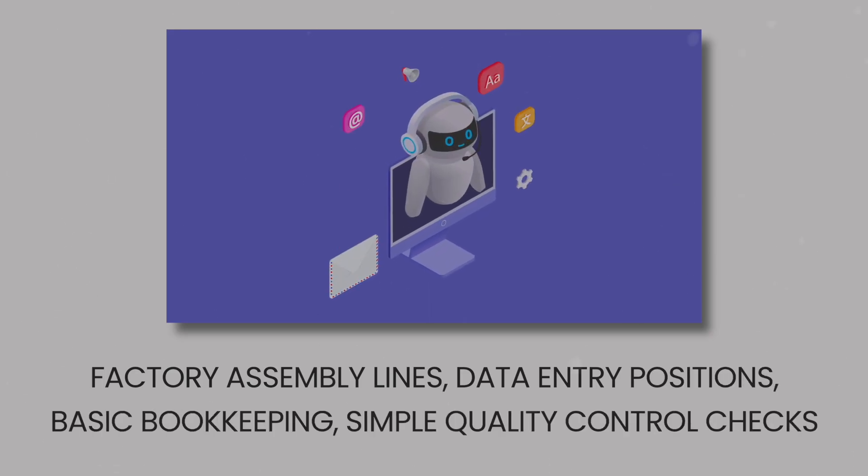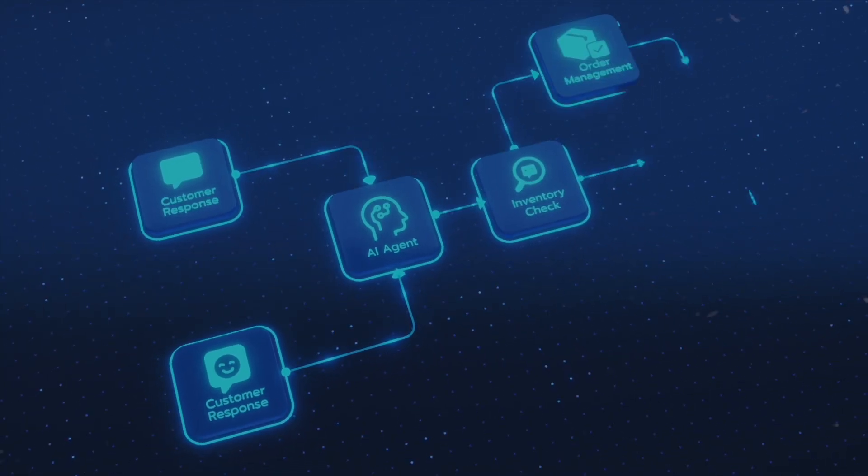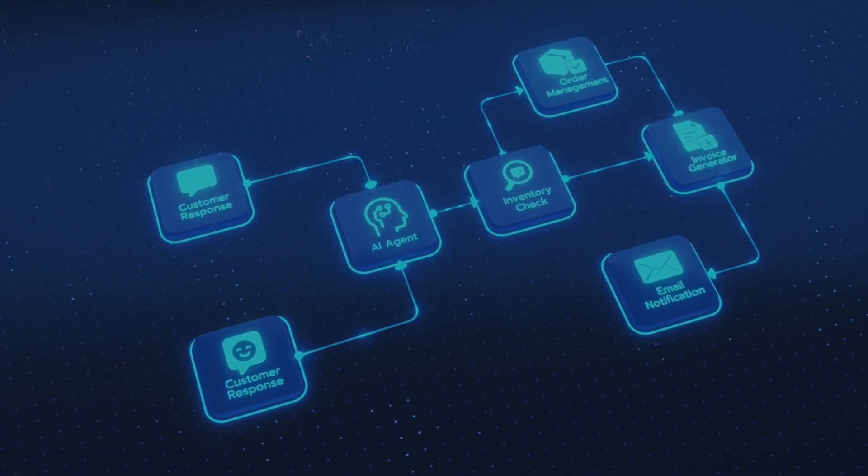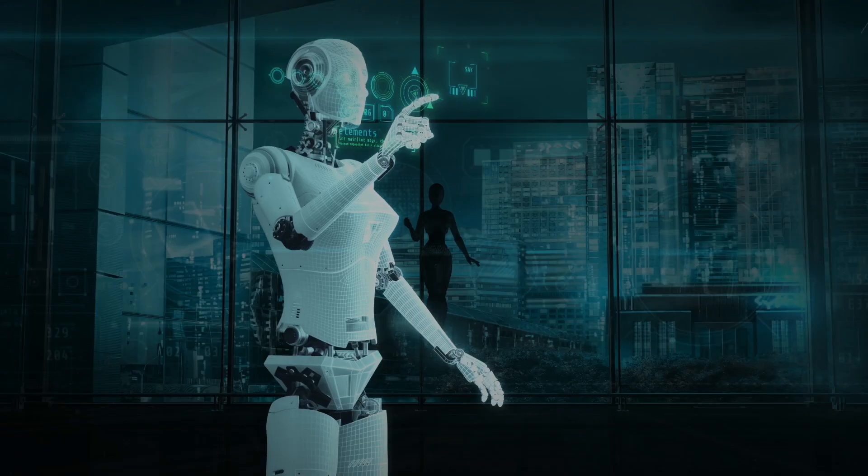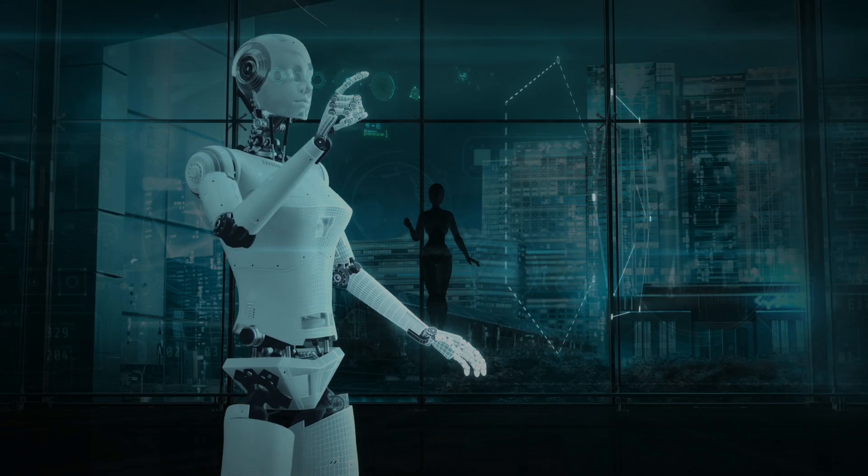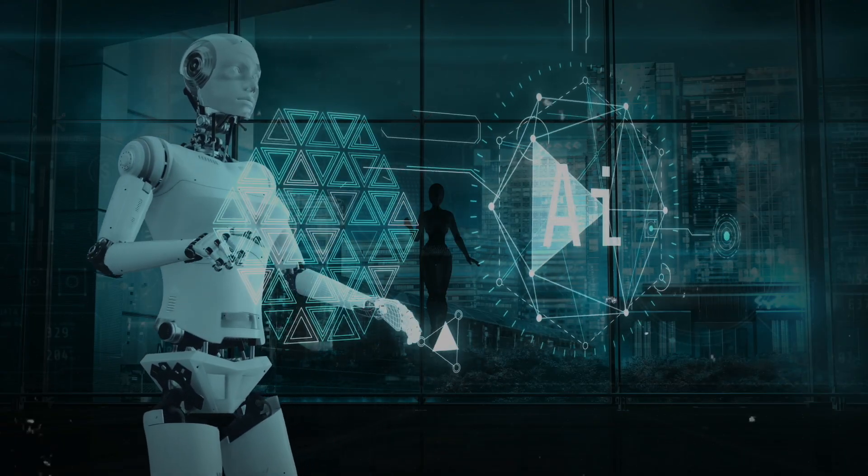Think about the jobs that once defined industrial society: factory assembly lines, data entry positions, basic bookkeeping, simple quality control checks. These roles revolve around performing the same actions over and over with little to no variation. They're predictable, structured, and frankly, perfectly designed for machines.